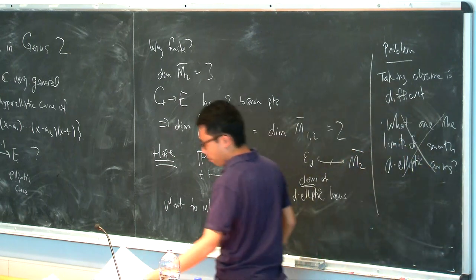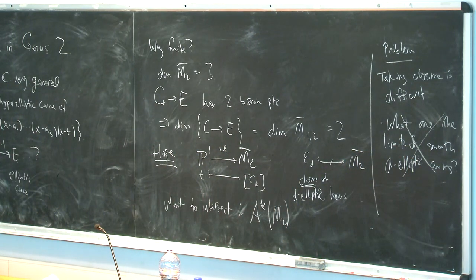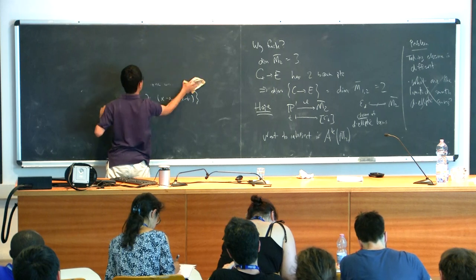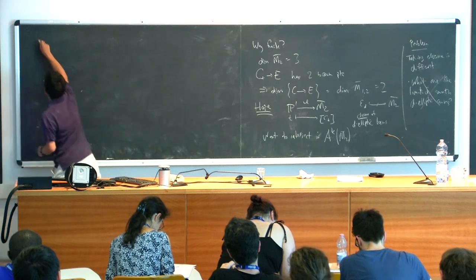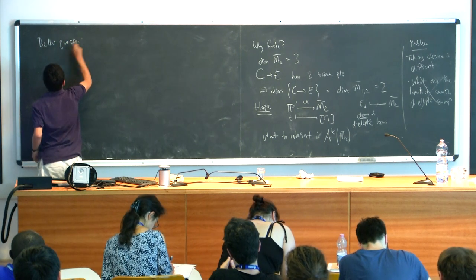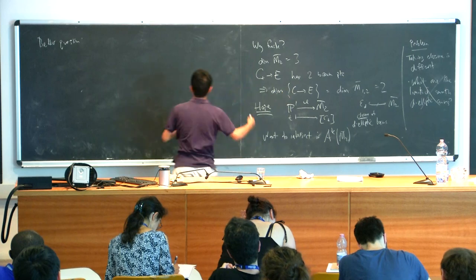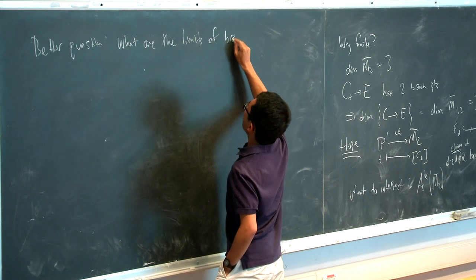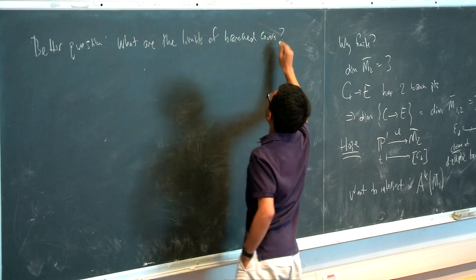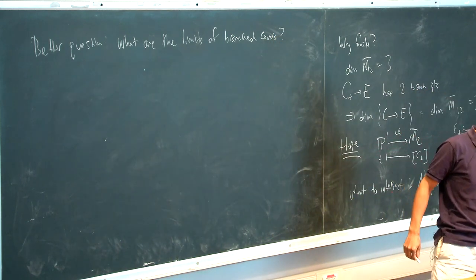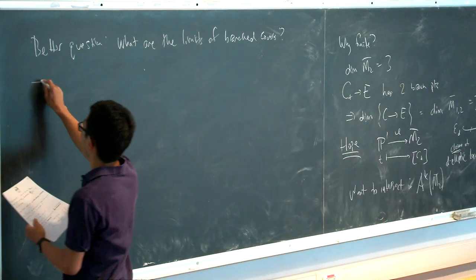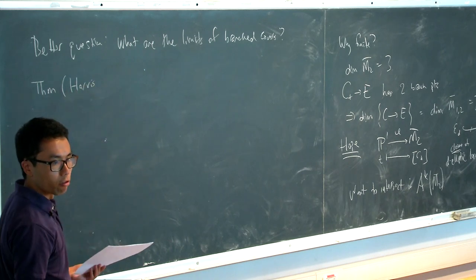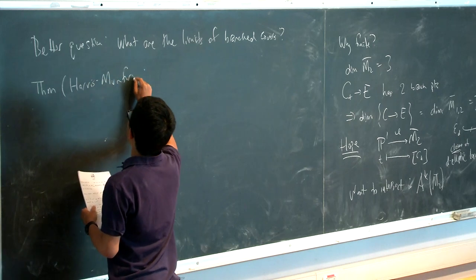In particular, the question arises that, what are the limits of a smooth D-elliptic curve? A priori is not so obvious. So let me, instead, phrase a what turns out to be a more reasonable question. So, better question, is what if I just remember the whole data of the family, of the cover? So instead, I can ask, what are the limits of branch covers? So this is essentially answered in the paper of Harris and Mumford, which we've already heard about. So this is the paper in which they prove that M_g is general type for g large. This is Harris and Mumford, 1982.